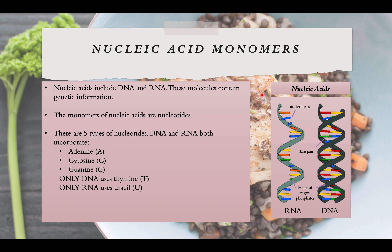Most large biological molecules are polymers — long chains made up of repeating molecular units, or building blocks, called monomers. If you think of a monomer as a bead on a string, you can think of a polymer as a necklace with a series of beads all strung together. The monomer for a protein is an amino acid, and the monomer for DNA is the nucleotide.